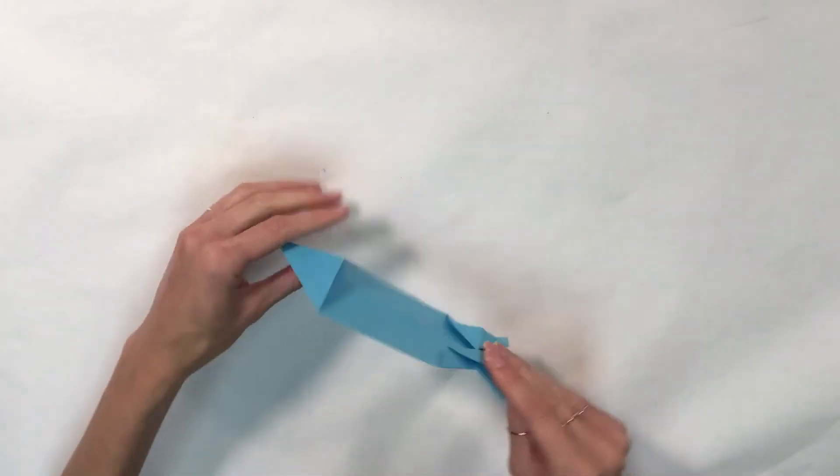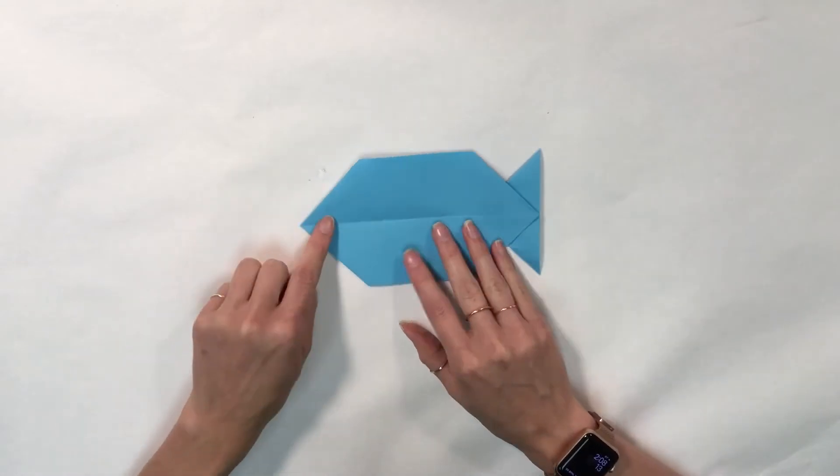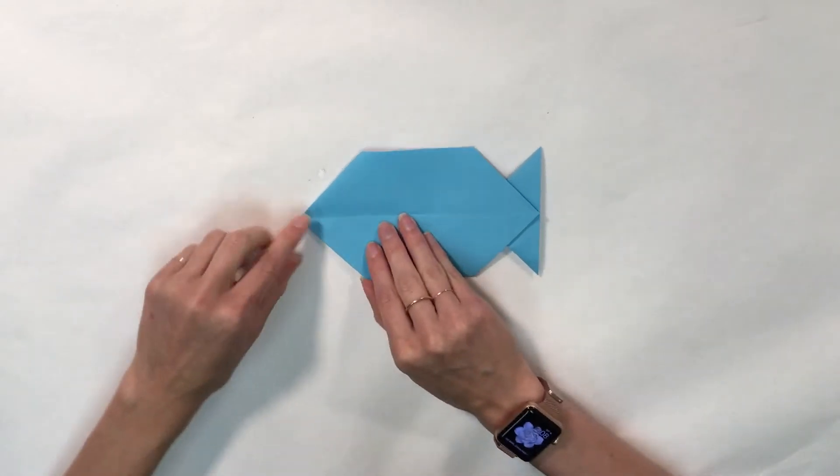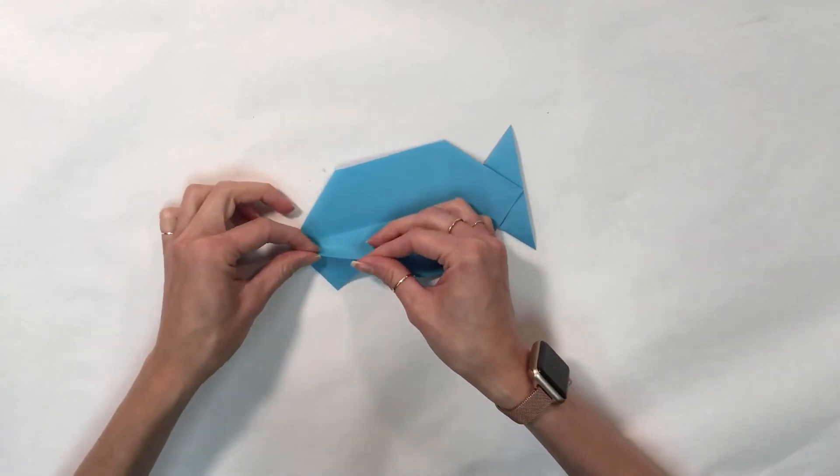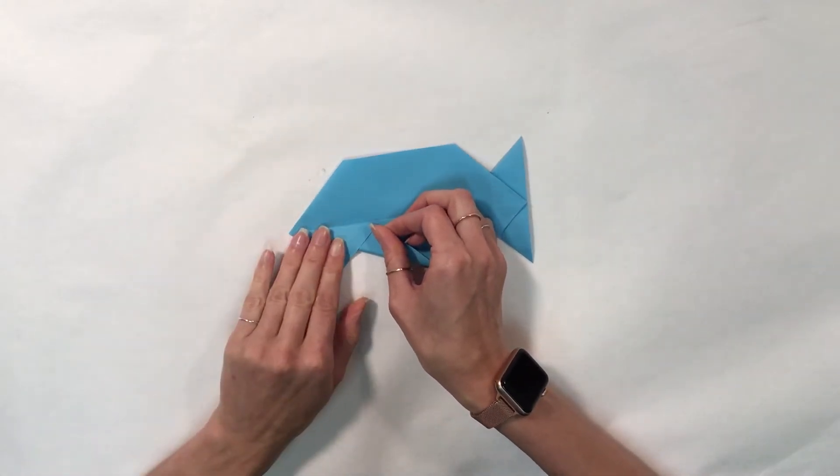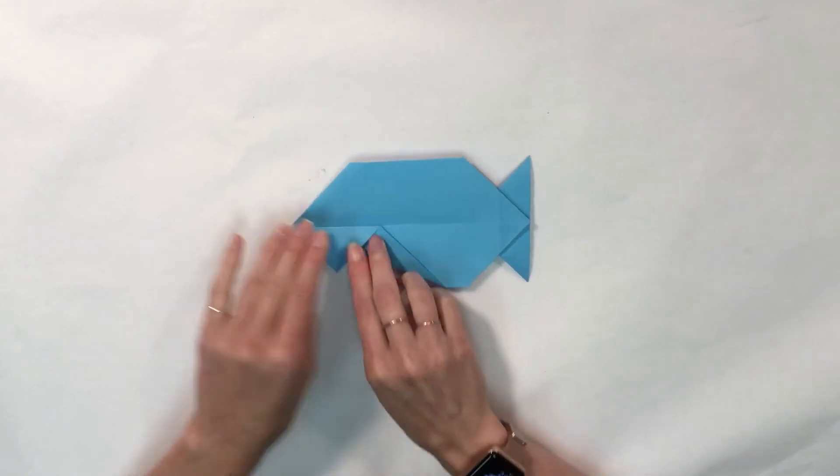I'm going to flip my paper back over, and I'm going to fold this edge to my center line. And repeat.